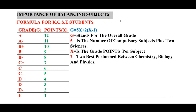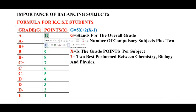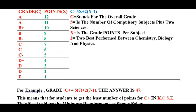I will give you a formula for KCSE students on how to calculate the points you want. But before we look at this formula, let us see — if you get an A in any subject it means you have 12 points, if you get an A minus you have 11 points, and so on down to E. If a student scores E, the number of points that student has is one. A student who has a C plus in any subject has already secured seven points.